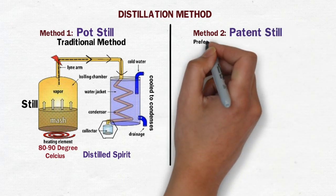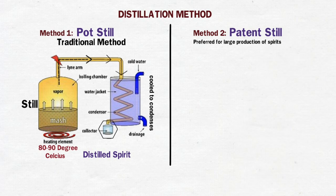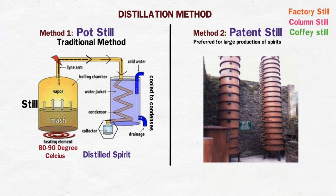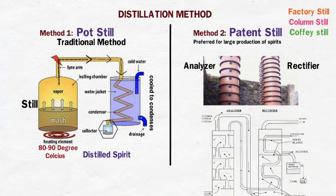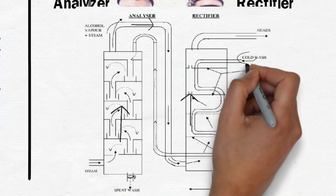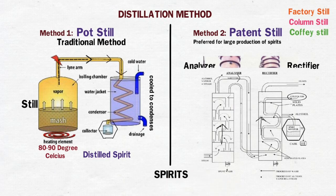The second method of distillation is called the patent still method. It is the fastest method of making spirit and is preferred for large production. It is also known by different names such as coffee still, factory still, or column still. This apparatus has two columns called the analyzer and the rectifier. Steam is passed from the analyzer to the rectifier. The analyzer vaporizes the alcohol from the hot wash, and the rising vaporized alcohol proceeds to the rectifier column where it cools down with the cold wash, yielding a liquid solution with increased alcohol strength.